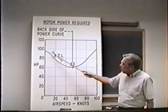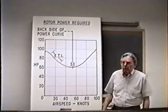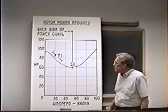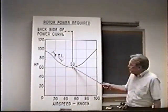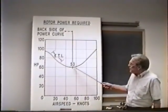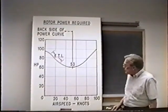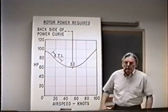As you start to move forward, the power required drops off very rapidly as you go through effective translational lift and then bottoms out here at about 53 knots, then starts back up again and goes up quite steeply as you go into high-speed flight.